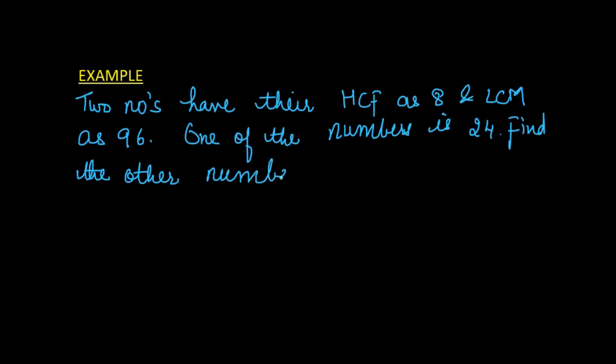The HCF is 8, the LCM is 96. Let the two numbers be a and b. One of the numbers a is given as 24, and we have to figure out b. We know that HCF × LCM = product of the two numbers, in this case a × b.